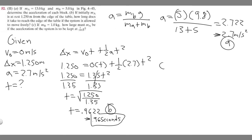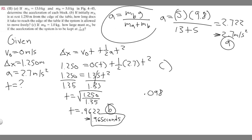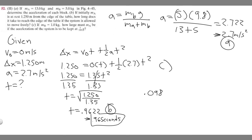Now let's move on to part c. It's saying if m sub b is one kilogram, how large must m sub a be if the acceleration of the system is to be kept at 1/100th of g. The acceleration is going to be 1/100th of g, and since g is 9.8 meters per second squared, dividing by 100 gives us 0.098. So 0.098 is our acceleration. M sub b is one kilogram, and we need to solve for m sub a.